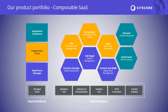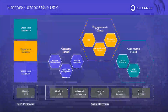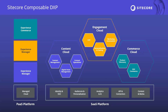As a quick recap, Sitecore delivers DXP products as composable and API-first products so they can integrate with each other or with marketing applications within our customers' platforms. These applications are organized within three main clouds: Content Cloud, Engagement Cloud, and Commerce Cloud. CDP and Personalize, which is the product we are talking about today, lies within the Engagement Cloud.